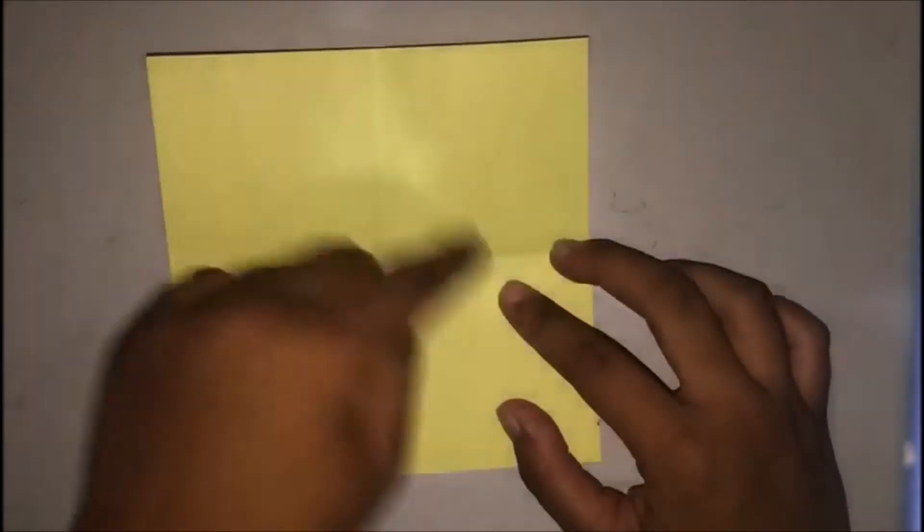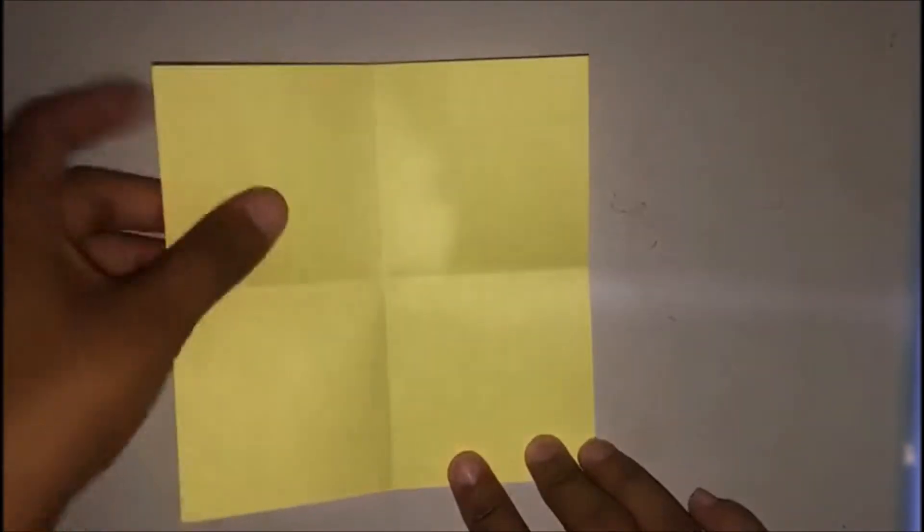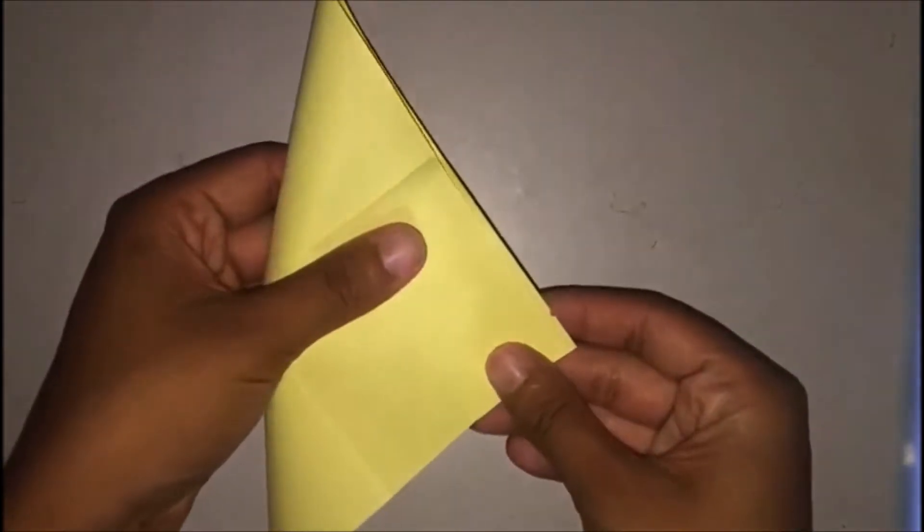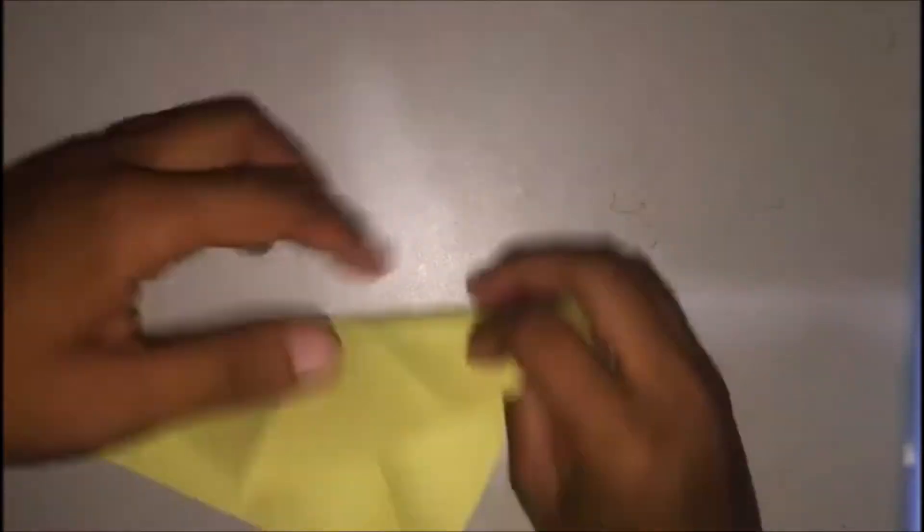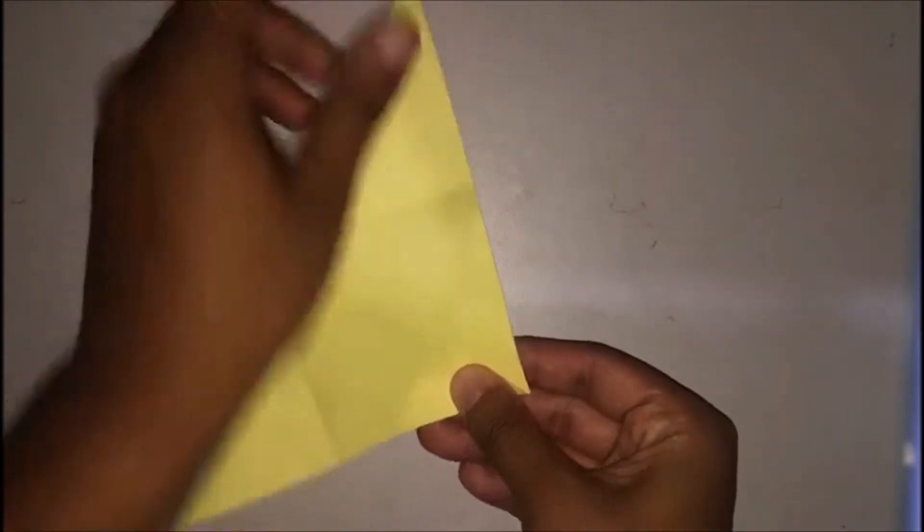The next step is to fold diagonally, so you take the top of your sheet of paper and fold it diagonally. Now do the other side as well and fold it diagonally.